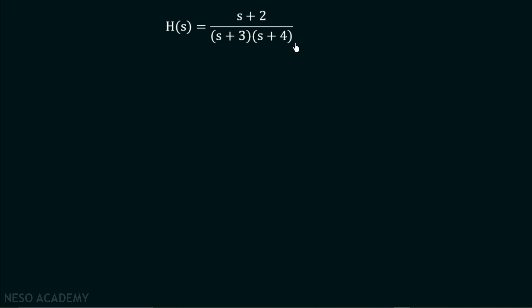Let us talk about zeros and poles for this transfer function. Zeros are the values of s for which the numerator becomes zero. So if we equate the numerator equal to zero, we get the zeros of this transfer function. For this transfer function, we have only one zero, which is s = −2.